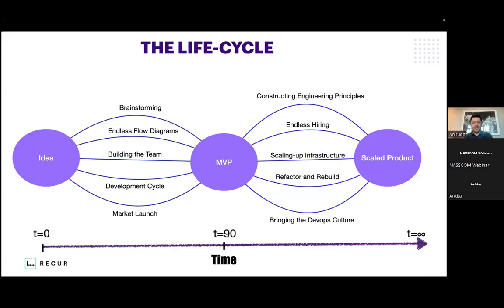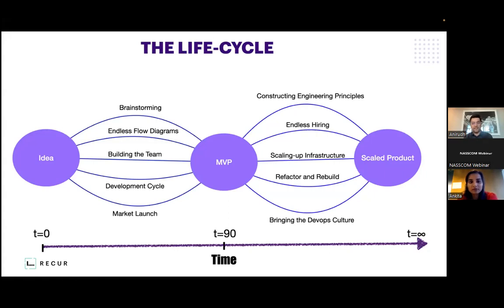In parallel, building the right team from scratch. This is the trickiest part a startup has to solve when moving from ideation to MVP stage. At this point, we generally hire interns and freshers who are energetic and have a good sense of software engineering. Then your development cycle starts, you do the market launch, and in a 90 to 120-day timeframe, you do your MVP launch.